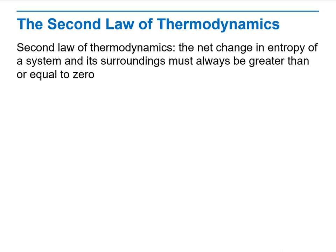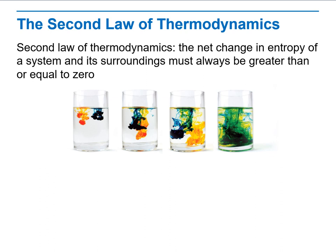Now, the second law of thermodynamics — in our lesson we are interested in it. What does it state? The change in entropy of a system and its surroundings must always be greater than or equal to zero. This is the second law. What is entropy? Entropy is the measure of disorder in a system. As you can see here, the ink gets more disordered from left to right. Will the ink ever be more ordered? Not on its own.